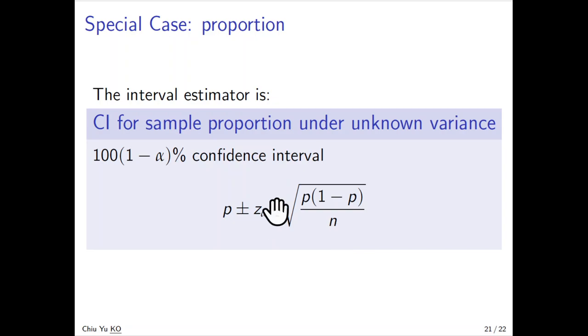That is an approximation when np or n times 1 minus p is bigger than 5, then we can use that.